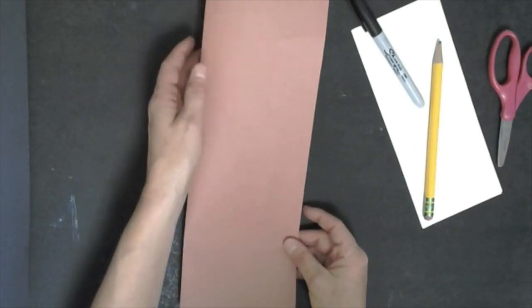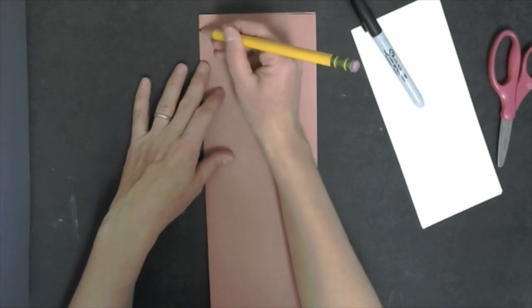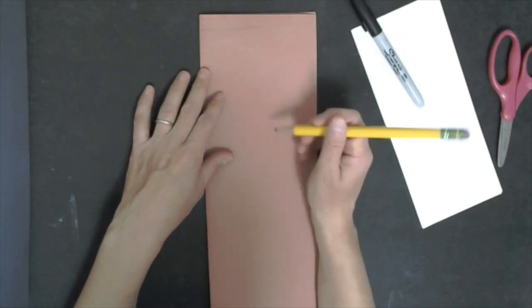This is important because when you're drawing out your hydrea vase you want to make sure that it starts off on the fold because you're going to be cutting this out to make it symmetrical.